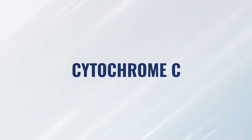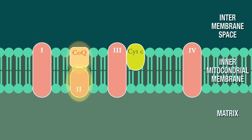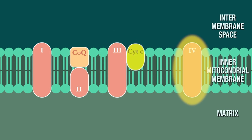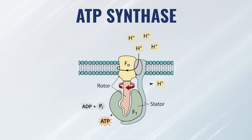They have long scientific names, but we'll just call them complex one, complex two, complex three, and complex four. We also have two mobile carriers: one is called ubiquinol and the other is called cytochrome C. So the sequence is complex one, ubiquinol, complex two, complex three, cytochrome C, complex four. And then at the end stage, you have ATP synthase, which is literally the machinery in charge of making ATP.